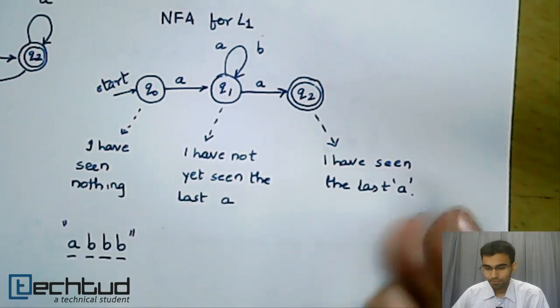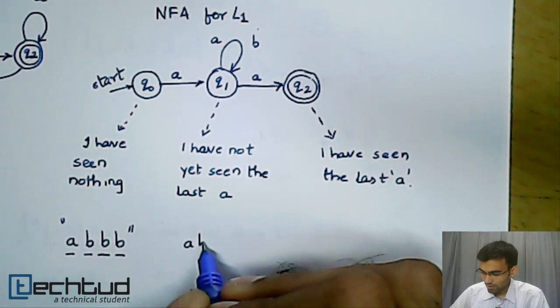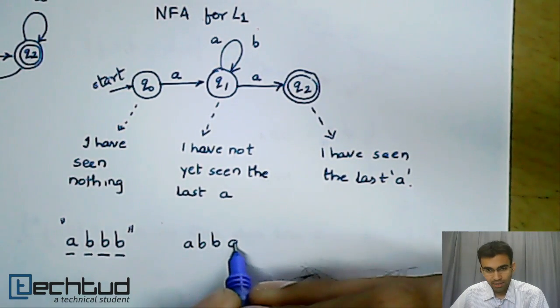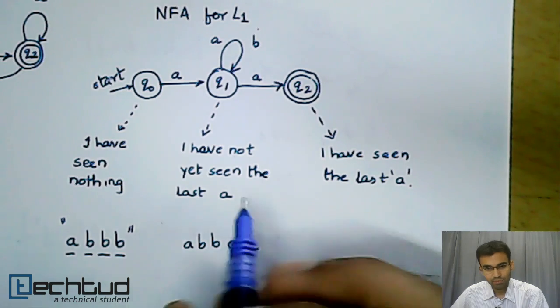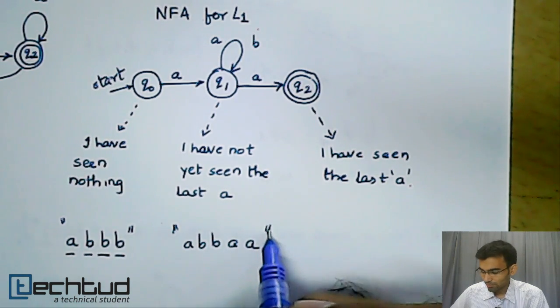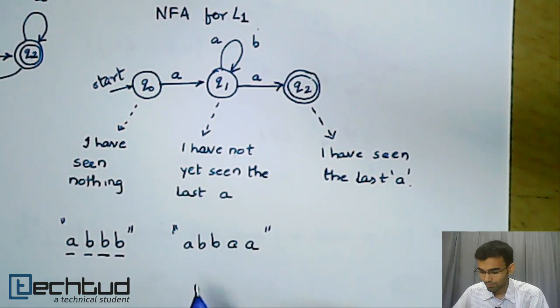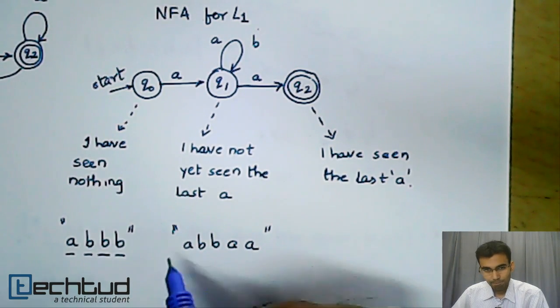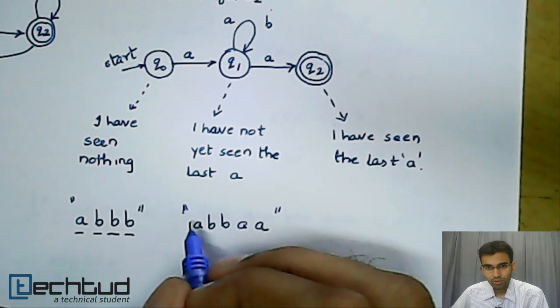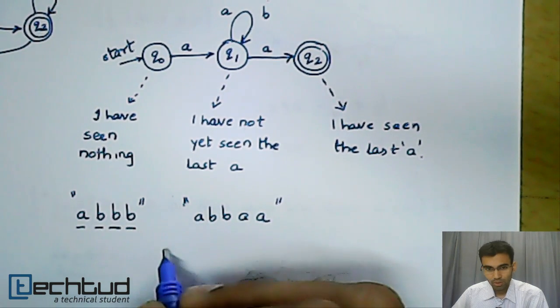Let us take another string A, B, B, A, A. This particular string, when applied on the machine, the machine will behave as follows. Let me draw this out for you.